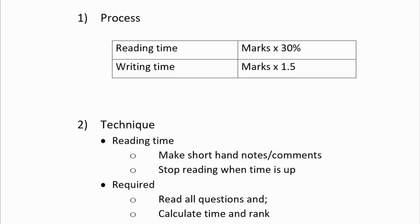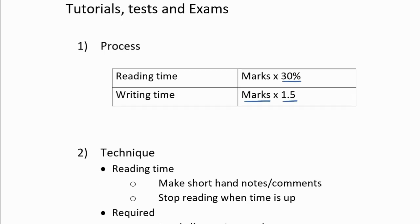Some admin: you're going to have 30% of your total marks as reading time. So if it's out of 100, times by 30% — you've got 30 minutes reading time. Your writing time is the total marks multiplied by 1.5, which means you can work out your writing time for each question.